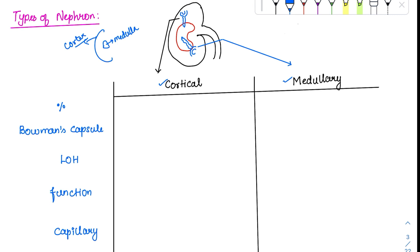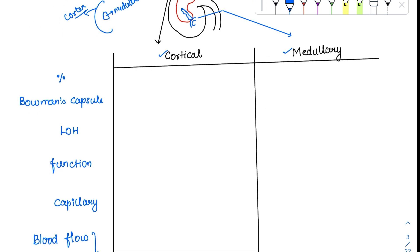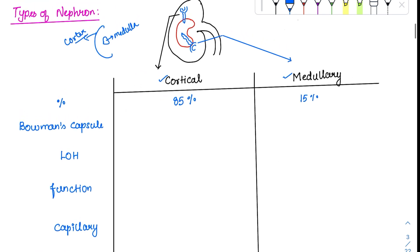Looking at the differences: the maximum percentage is contributed by cortical nephrons at 85%, whereas medullary nephrons are only around 15%. Regarding the location of Bowman's capsule — in cortical nephrons it is located in the cortex, and even for medullary nephrons, the Bowman's capsule is also located in the cortex.